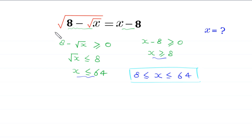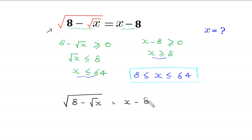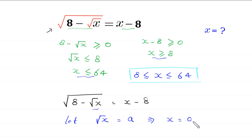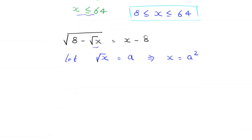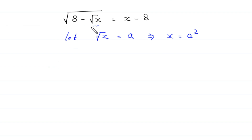Now let's continue with the original equation: square root of (8 minus root x) equals x minus 8. We suppose that root x equals a. If we square both sides, this implies that x equals a squared. So the equation becomes: square root of (8 minus a) equals a squared minus 8.